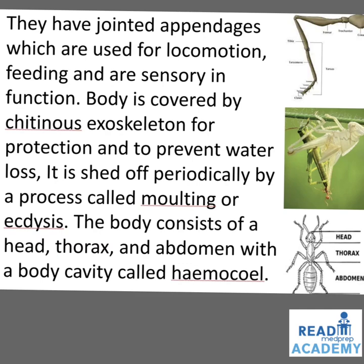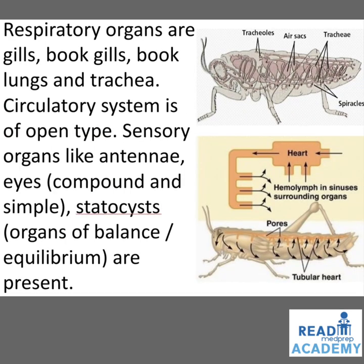In the right side below image, you can see the insect divided into head, thorax, and abdomen. Respiratory organs are gills, book gills, book lungs, and trachea. The circulatory system is of open type. Sensory organs like antennae, eyes which are compound and simple, statocysts — organs of balance and equilibrium — are present.